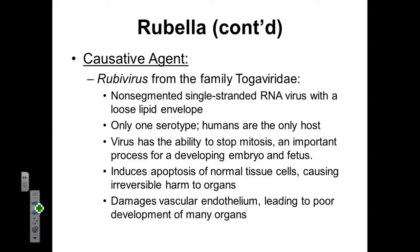The rubella virus has the ability to stop mitosis, so the younger a patient is when infected, the more pronounced the damage will be. If a patient has a prenatal infection and the virus begins to disrupt mitosis early in the developmental period, there will be very profound birth defects. This virus is also capable of inducing apoptosis of normal healthy cells, and depending on the degree of apoptosis, can irreversibly cause harm to the tissues of major organ systems. It's also capable of damaging our vascular endothelium — the inner lining of the vascular system — which hinders blood flow and causes organs to suffer poor development.